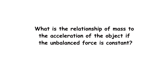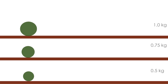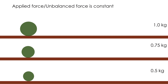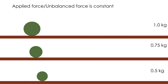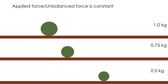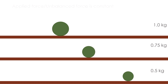How about the relationship of mass to the acceleration of the object if the force applied is constant? We use three balls having different masses. If you apply the same amount of force, which of these three accelerates faster? Of course, the less massive ball, which is the 0.5 kg, will accelerate faster, while the 1 kg ball accelerates the least.